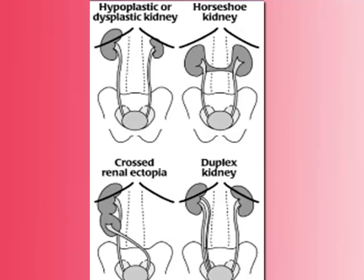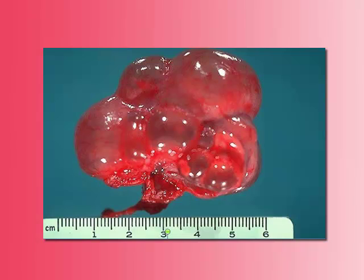The third renal malformation is rotation and location anomalies, meaning you can have a malrotated kidney or an ectopic kidney. The fourth is renal fusion, which can come in the form of a horseshoe kidney. The fifth is solid tumors, benign or malignant; the sixth is cystic tumors; and the seventh is multi-cystic renal dysplasia.